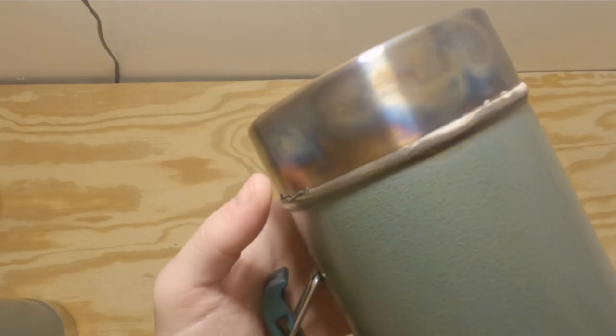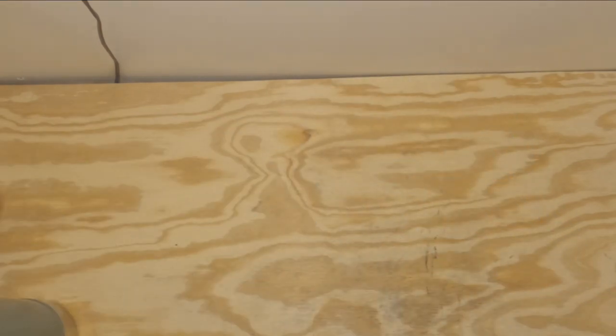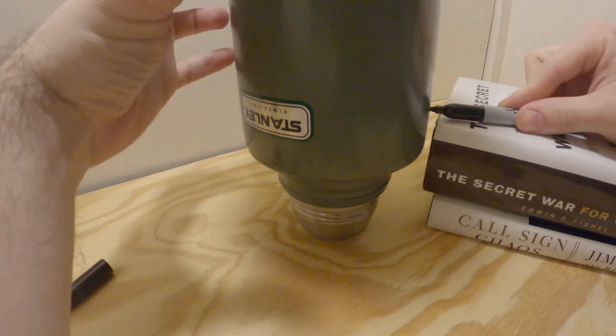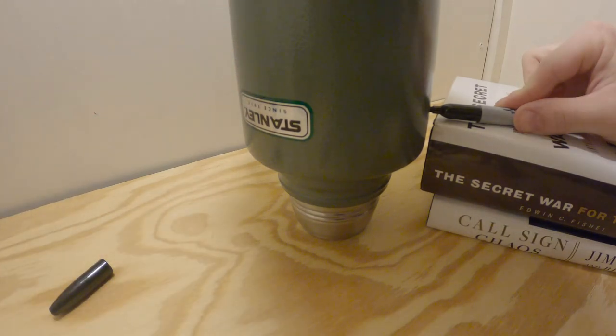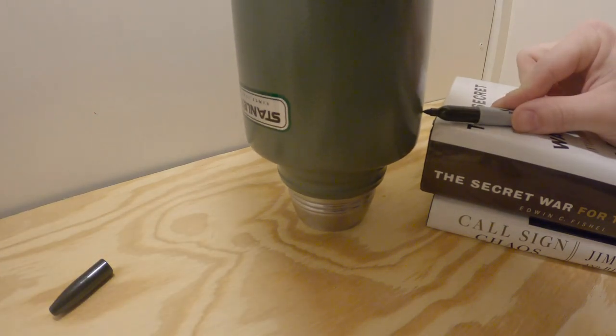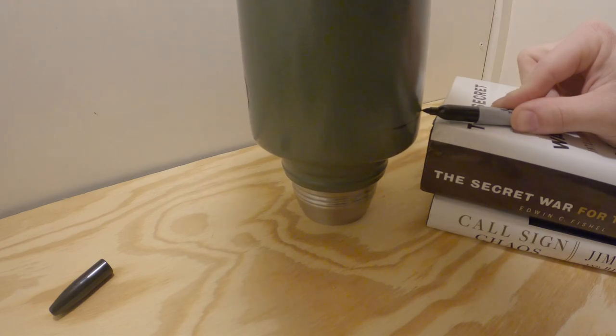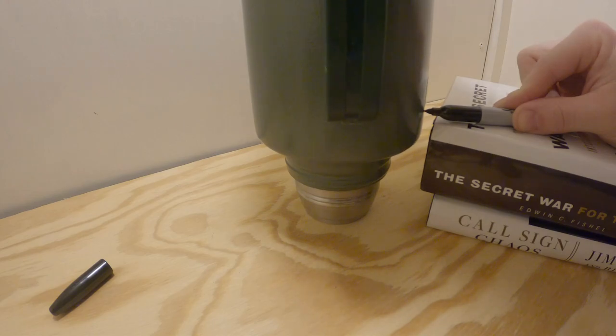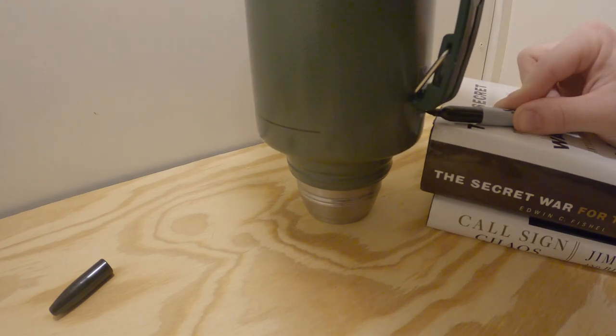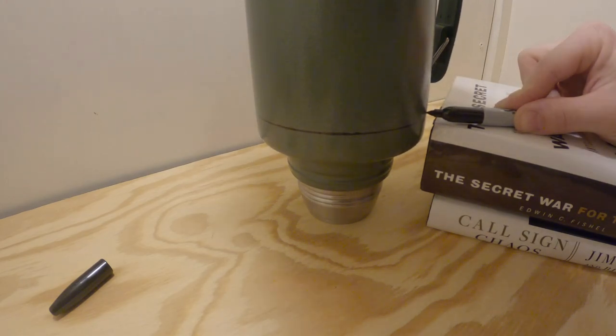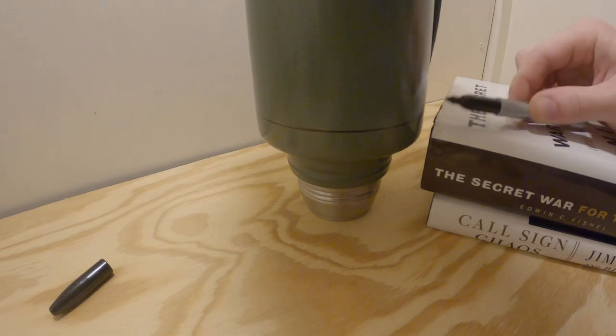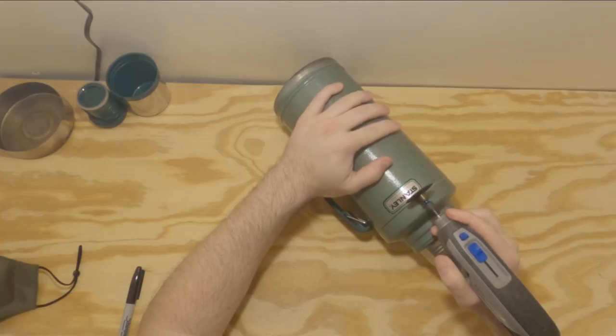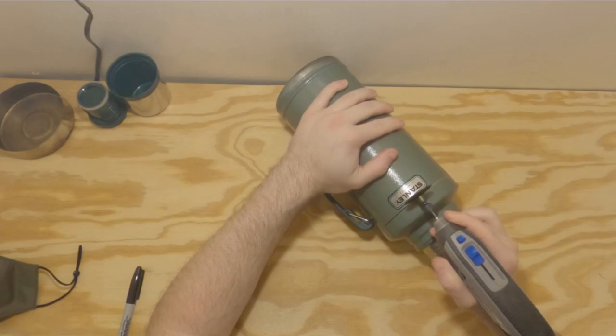Once you get the cap off, it's smooth sailing. The next step is to use a stack of books or some other mechanism for creating a straight line. We're drawing the line on this bottle just above the Stanley label because we want to preserve that label to make it look more authentic. This is about three-quarters of an inch from the shoulder of the bottle. We're just eyeballing it here; it doesn't need to be precise.